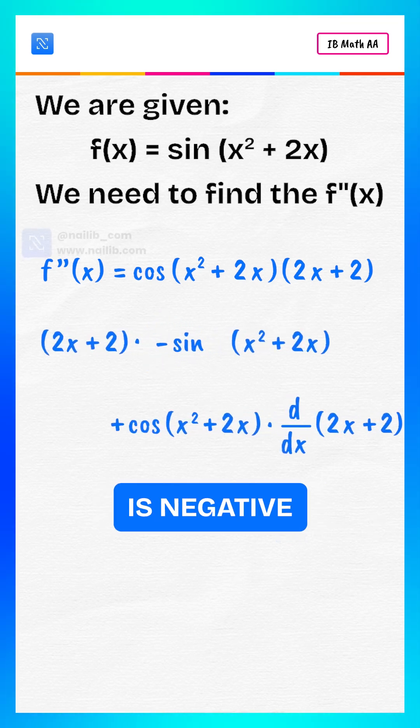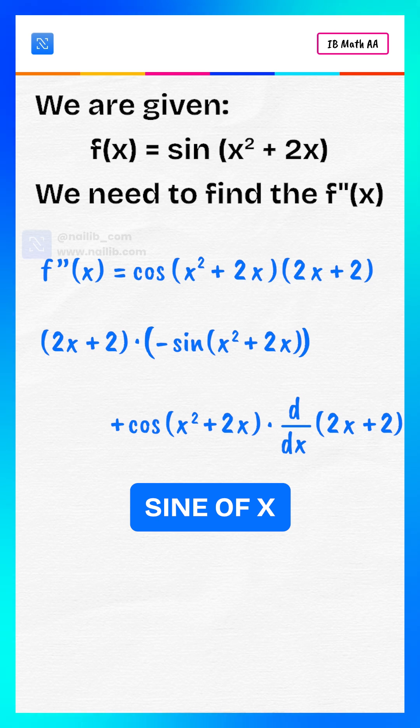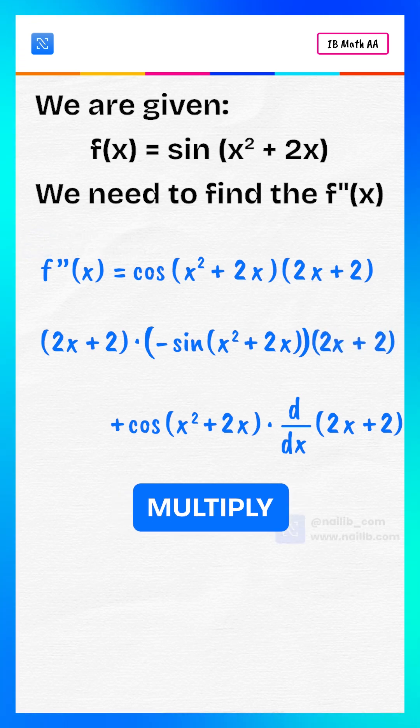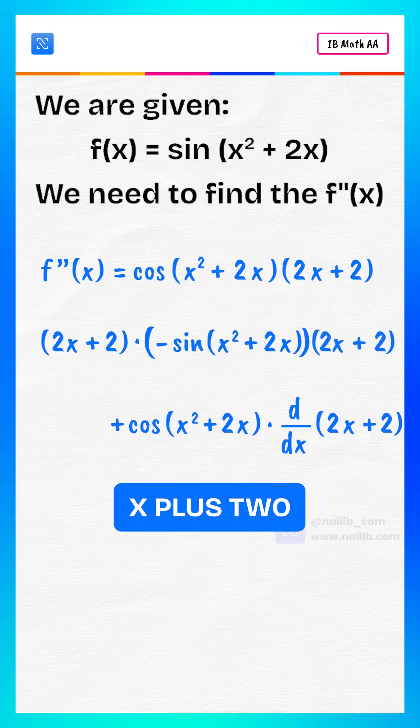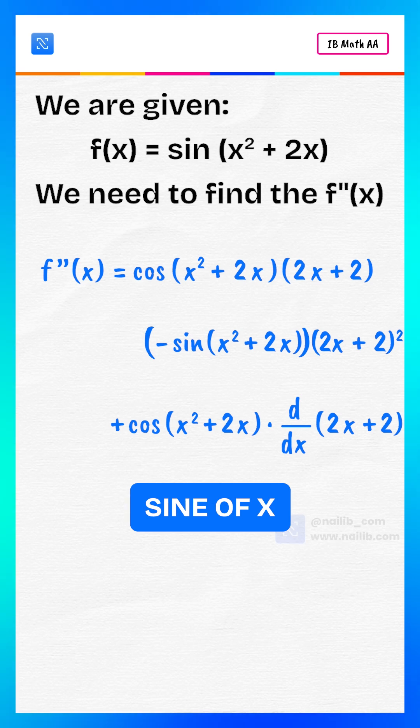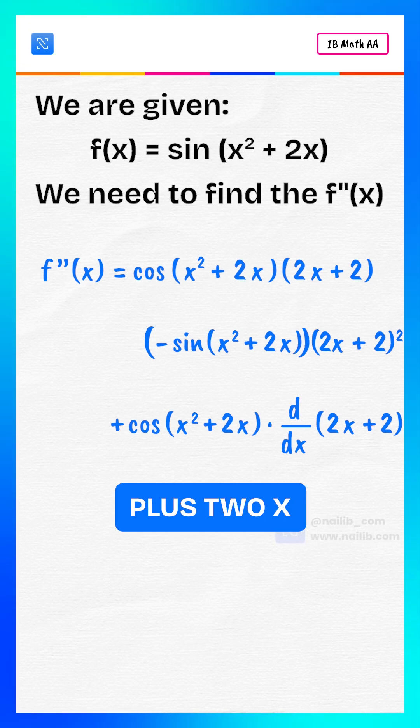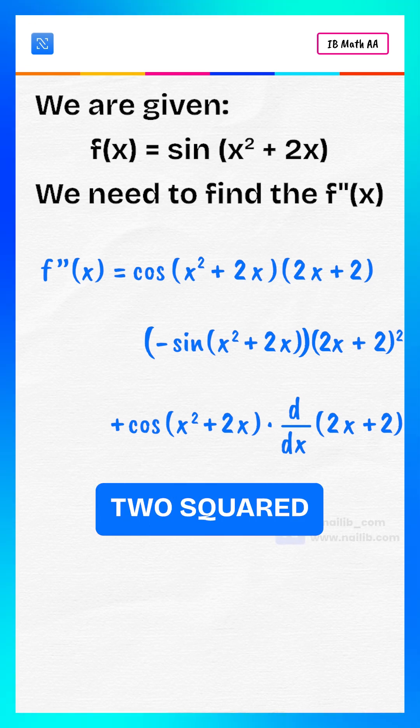Derivative of first part is negative sine of x squared plus 2x, multiply by 2x plus 2. So this becomes negative sine of x squared plus 2x, multiply by 2x plus 2, squared.